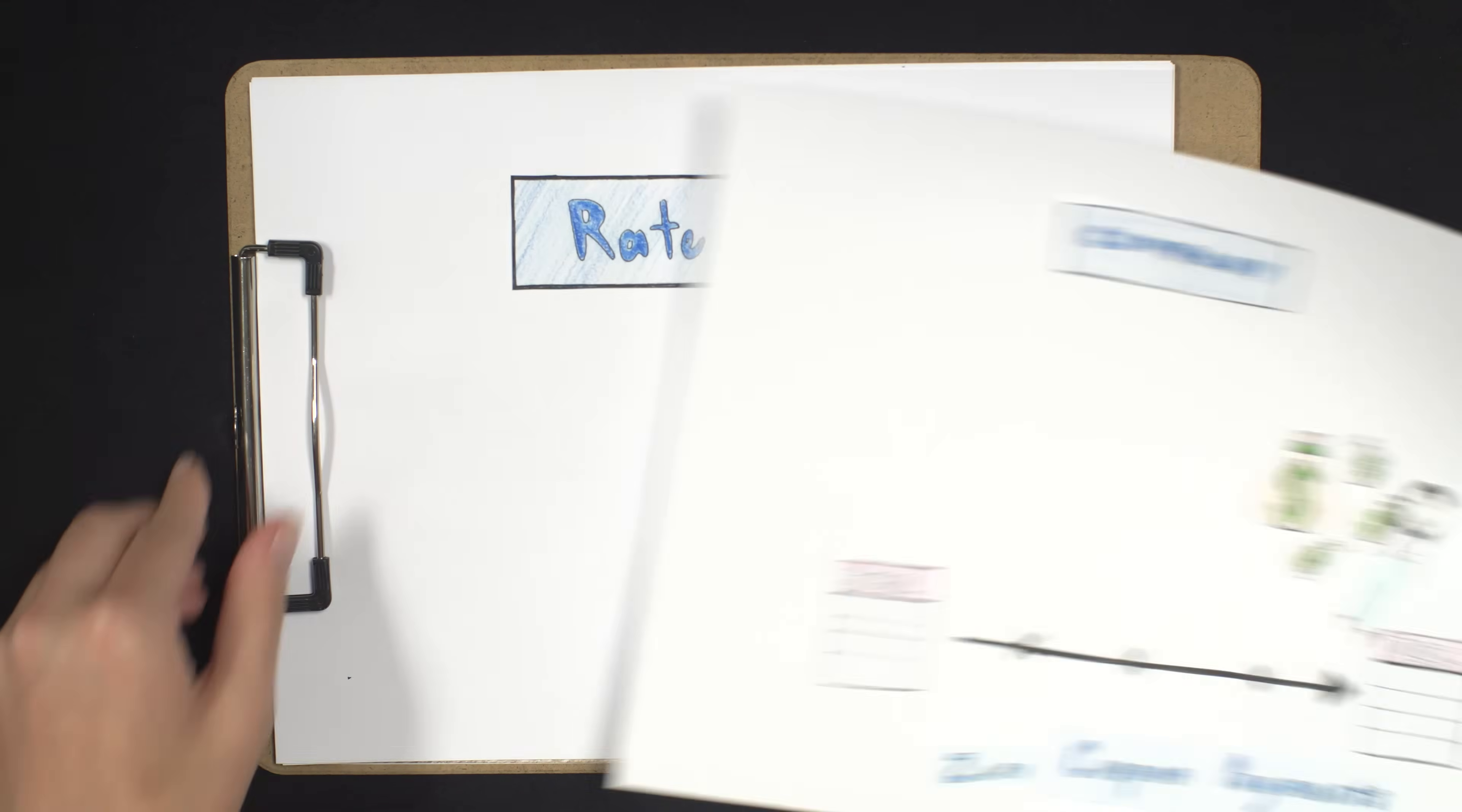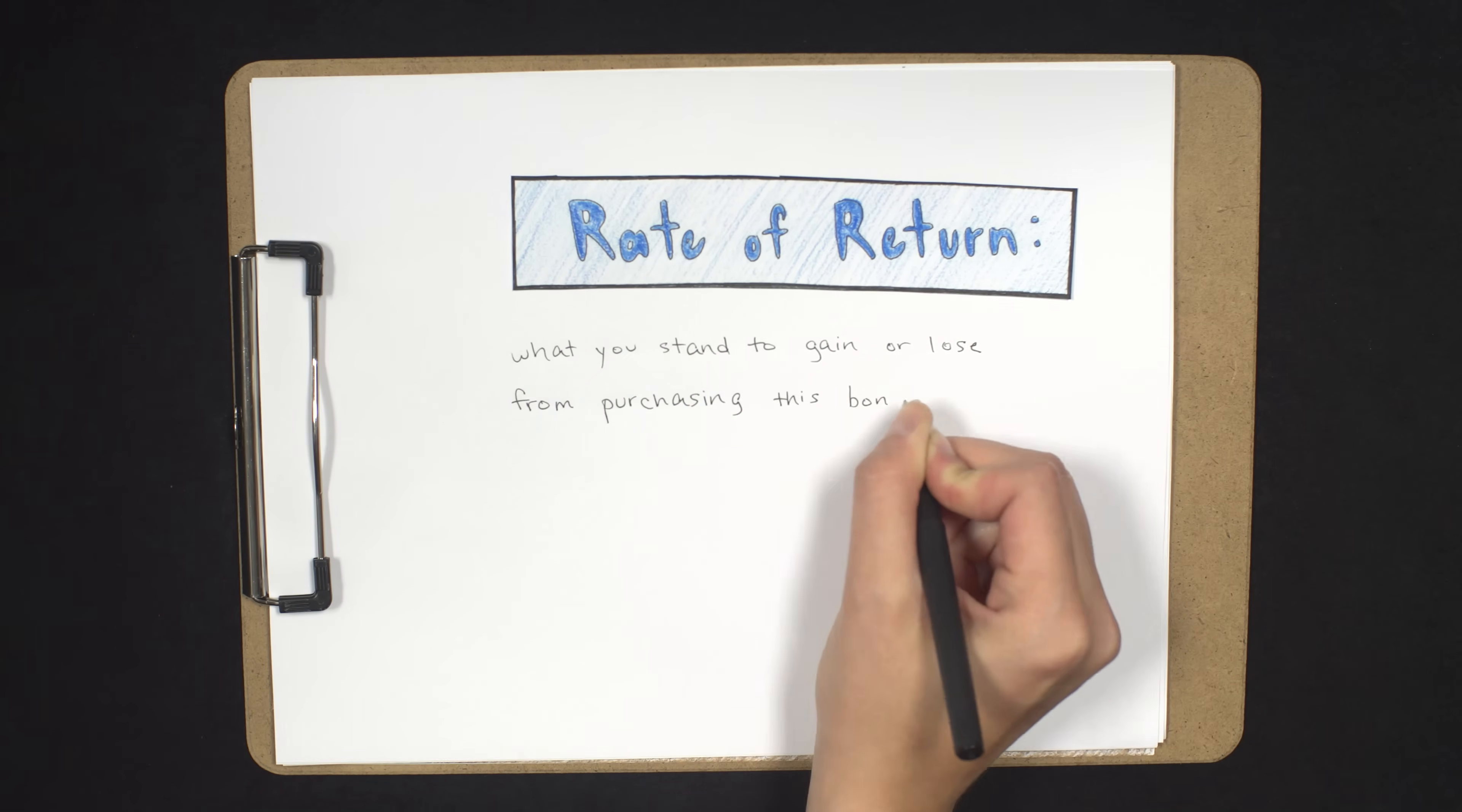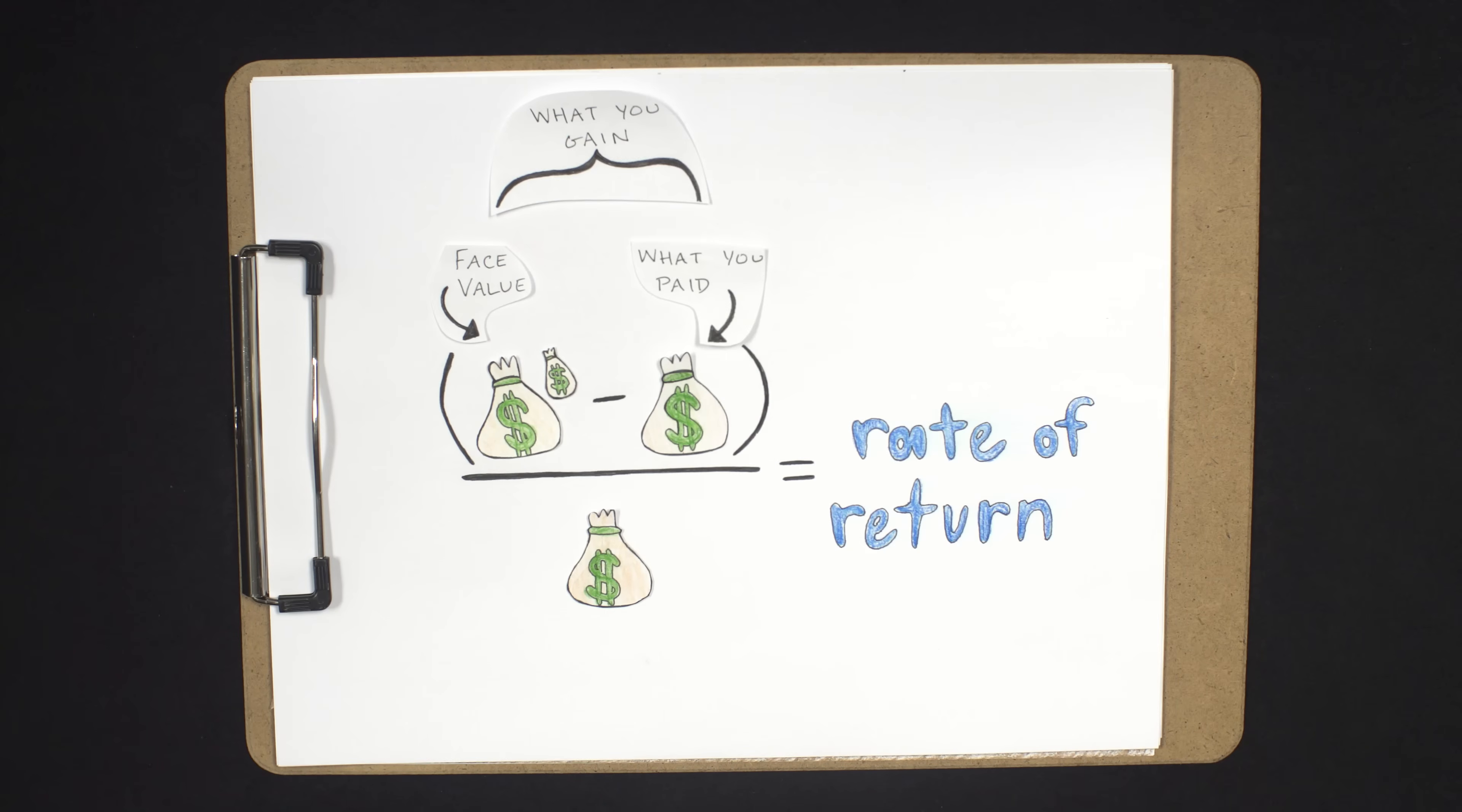And finally, what's a bond's rate of return or yield? It's just what you stand to gain or lose from purchasing this bond, expressed as a percent of your initial investment. Simply divide the gain or loss of the investment by the initial price you paid for the bond to find that implied rate of return, or the yield.